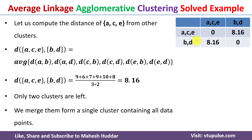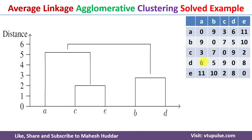With only two clusters remaining, we merge them into one final cluster — achieving the goal of agglomerative clustering, which starts with singleton clusters and ends with one single cluster. Now we draw the dendrogram. First, C and E were merged, then B and D were merged, then A was merged with CE, and finally ACE was merged with BD. This is how the dendrogram looks for the given dataset.